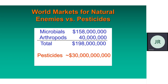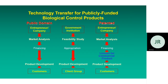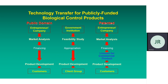World markets for natural enemies versus pesticides — what the data says. Biological control versus chemical pesticides: investment versus return. Red is investment, and the return in biological control is more — but only when it works. Technology transfer for publicly-funded biological control products involves government institutions, feasibility study, appropriate product development, client group, public domain gain, financing product development, patenting, and market analysis.